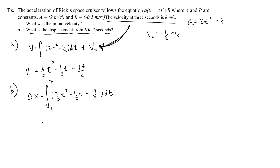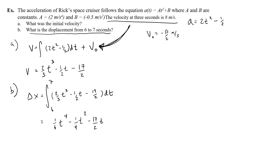Taking the antiderivative: t-to-the-fourth times 2 over 3 times 4 gives one-sixth t-to-the-fourth, minus one-fourth t-squared, minus 17 over 2 times t. This is a definite integral, so we evaluate from 6 to 7 — no need to add x-naught as the constant of integration. We plug in 7 for t and subtract the result when we plug in 6.